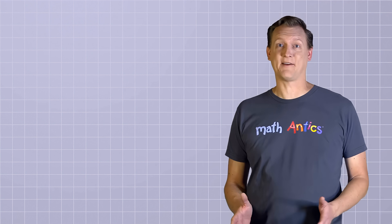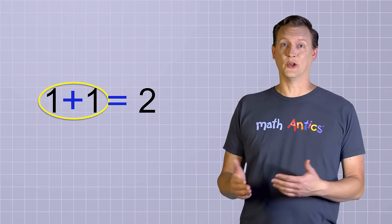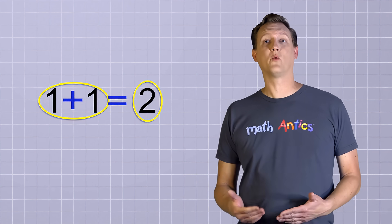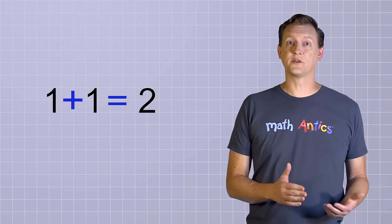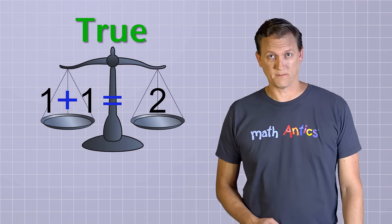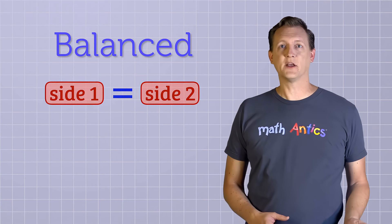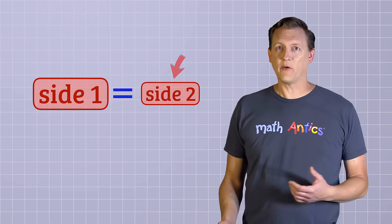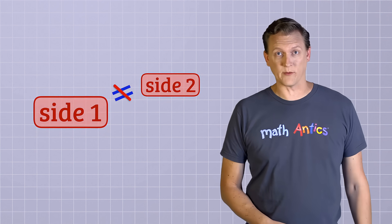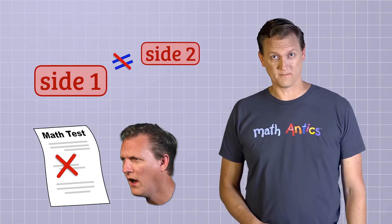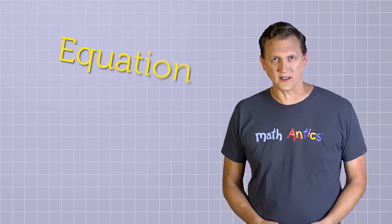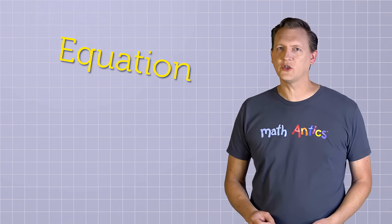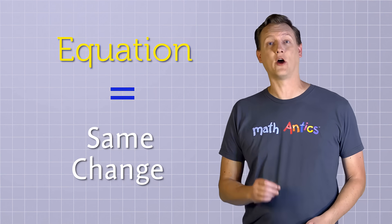That doesn't mean the two sides have to look the same. For example, in the equation 1 plus 1 equals 2, the expression '1 plus 1' doesn't look like 2, but it has the same value — so it's in balance, it's a true equation. The reason we need to know that equations must be balanced is that when we rearrange them, if we're not careful, we might change one side more than the other, making the equation get out of balance and no longer true — and then we won't get the right answer. The key is: whenever we make a change to an equation, we have to make the exact same change on both sides.